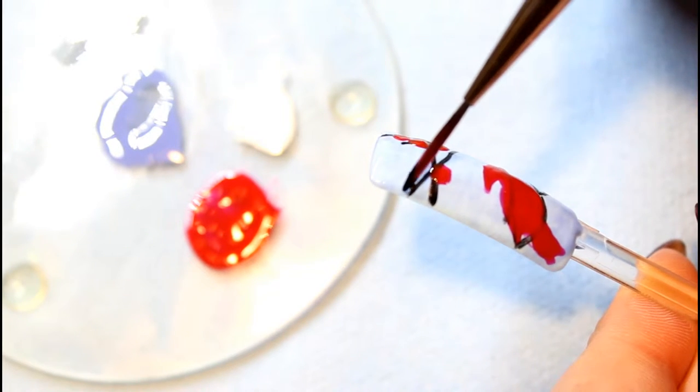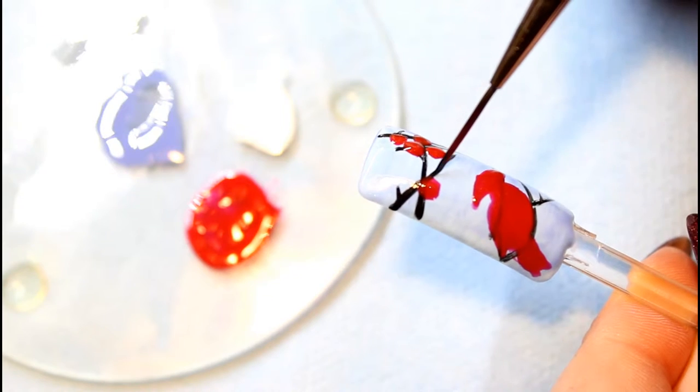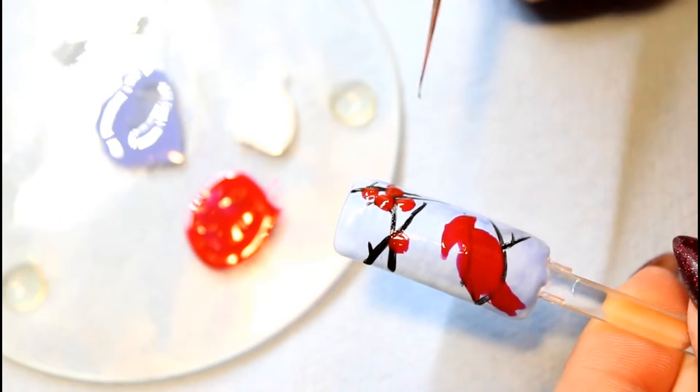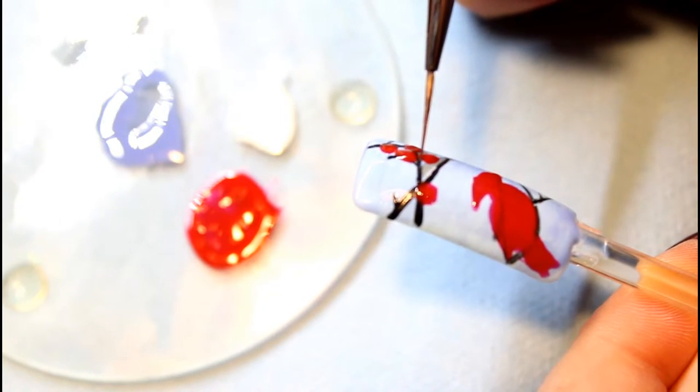Using your black acrylic paint and your striper brush, add a few more details onto the branches and darken them up where needed. You can also correct some areas that were covered up by the cardinal.